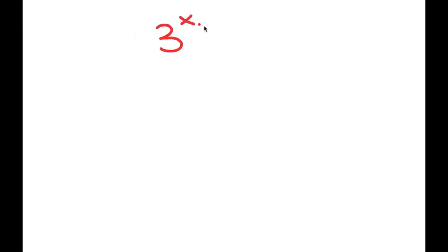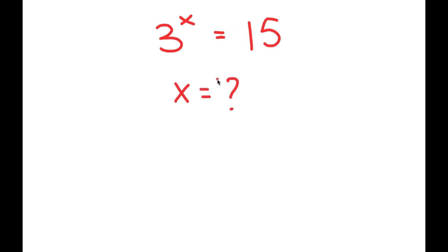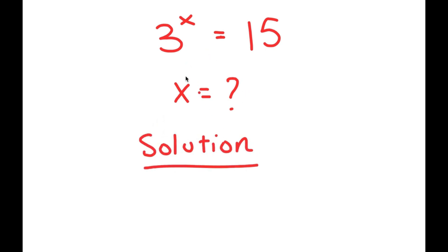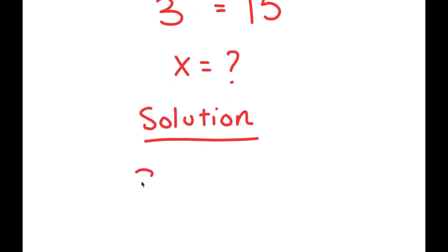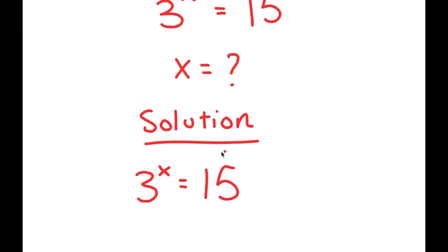So in this video, I'm going to solve the equation 3 to the power of x is equal to 15. My only variable in this equation is x, so that's what I'm solving for. Let me first start by rewriting my equation: 3 to the power of x is equal to 15.